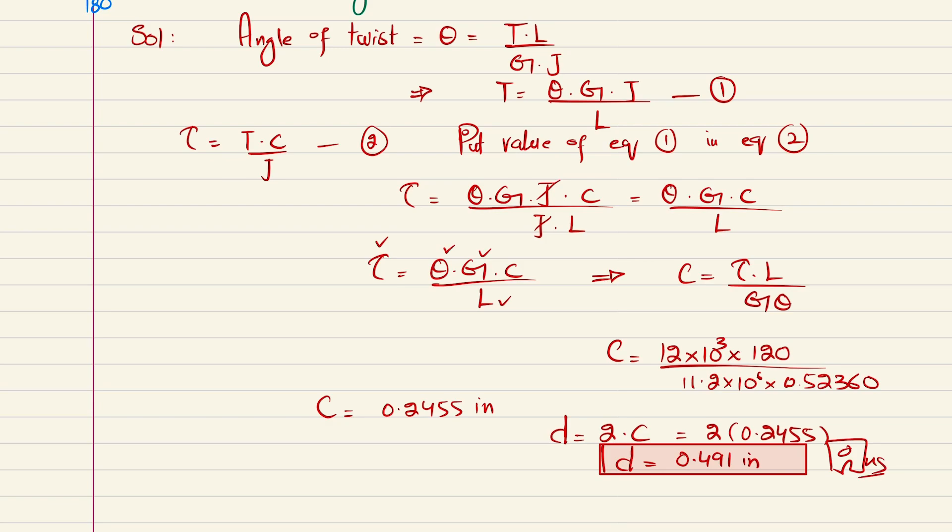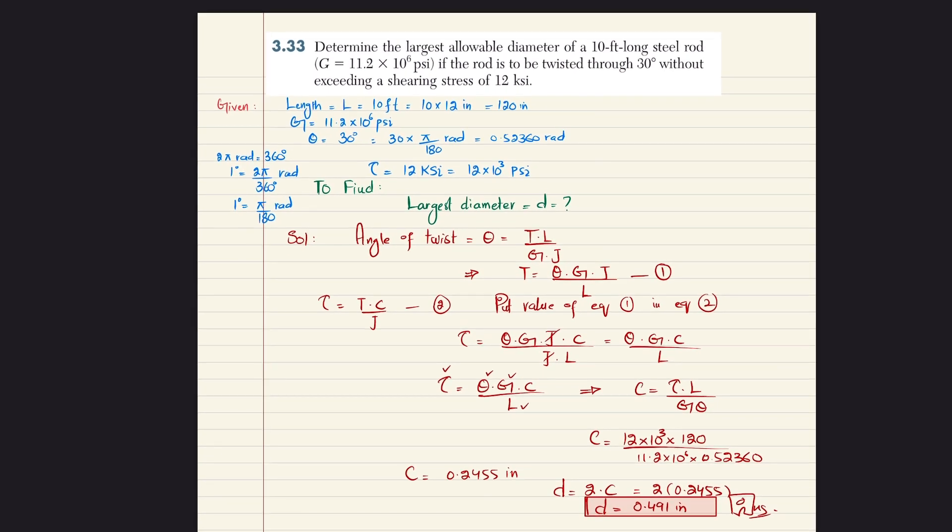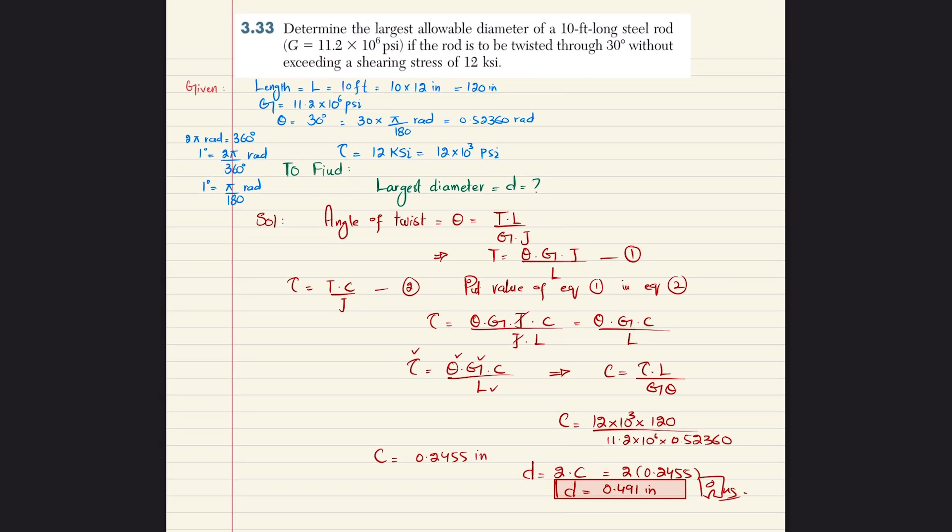So this is the required diameter of the steel rod if this rod is twisted to 30 degrees without exceeding the shear stress.